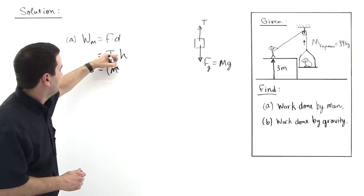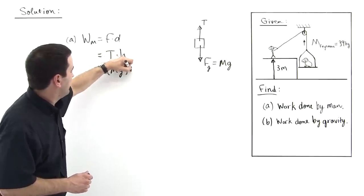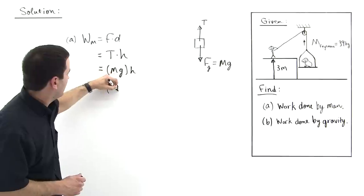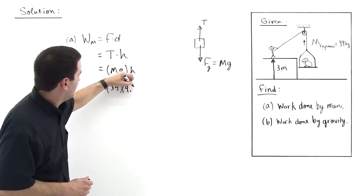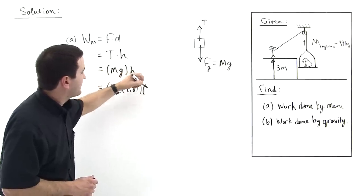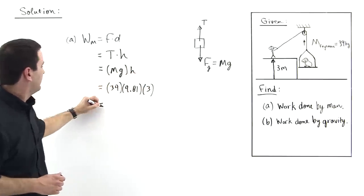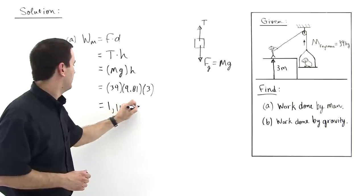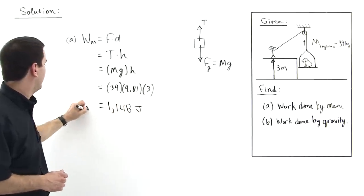So this is Mg times H, and so we plug in 39 times 9.81 times the height of 3. And so this number is 1,148 joules. This is the work done by the man.